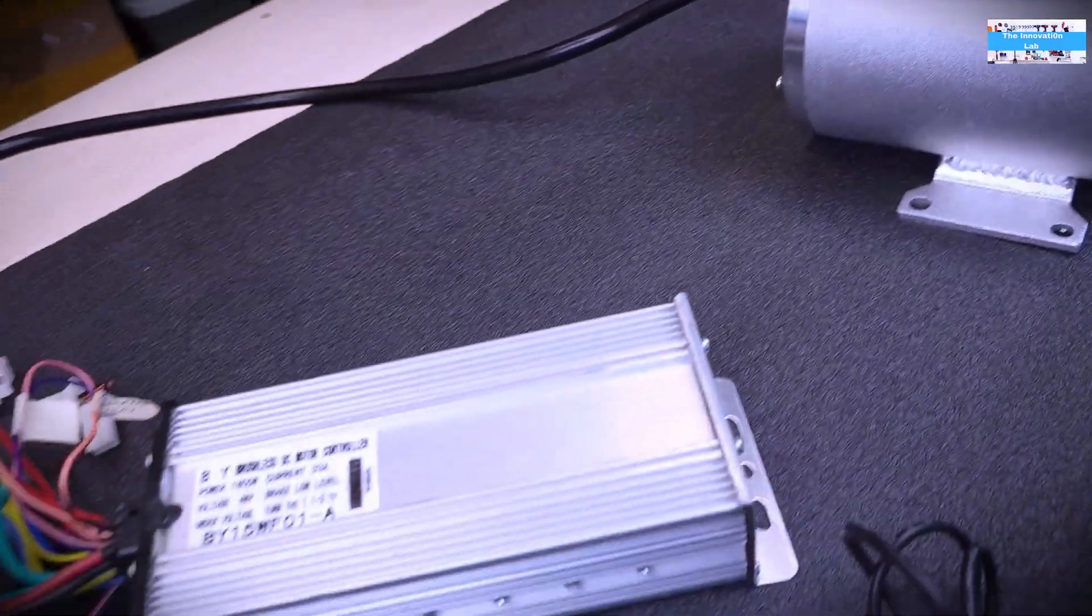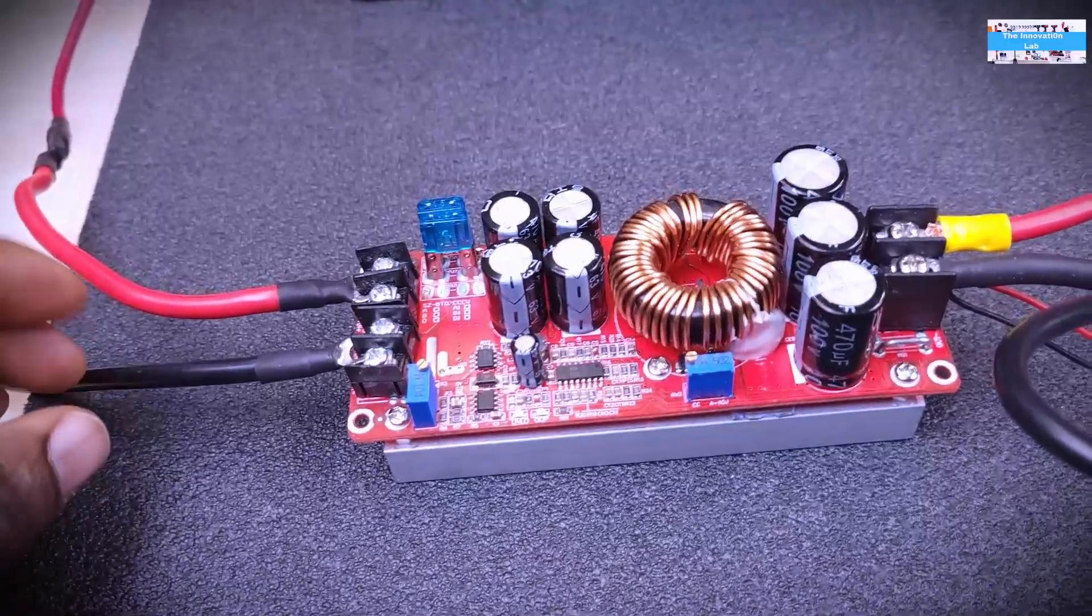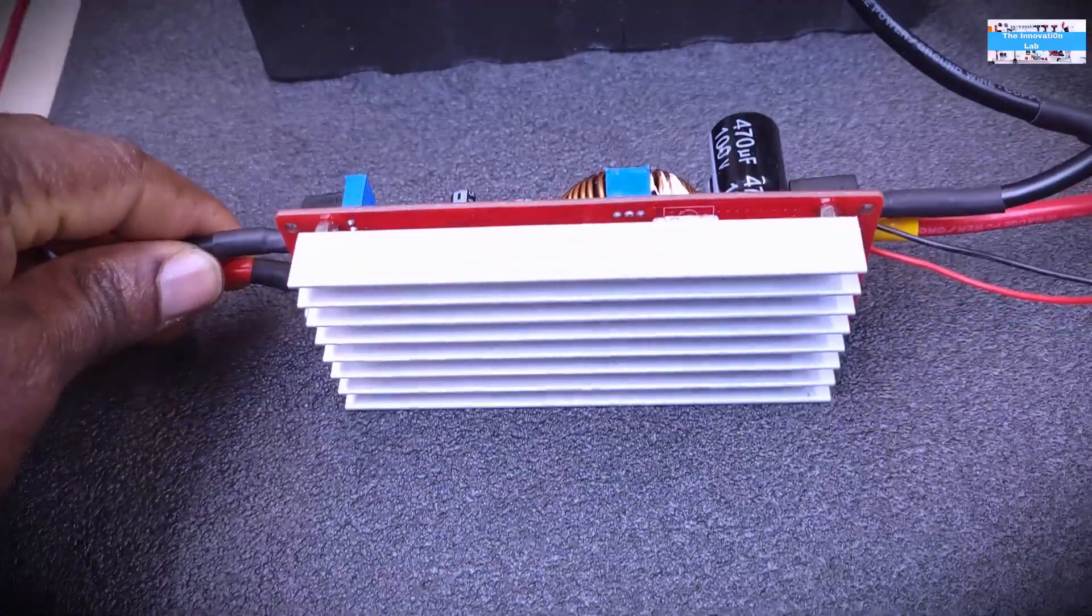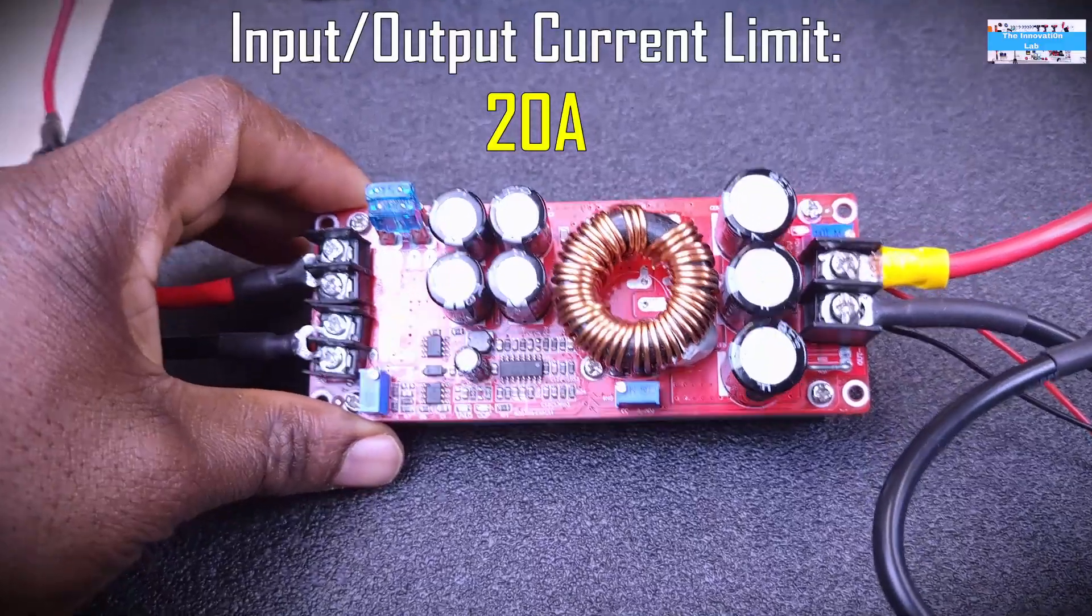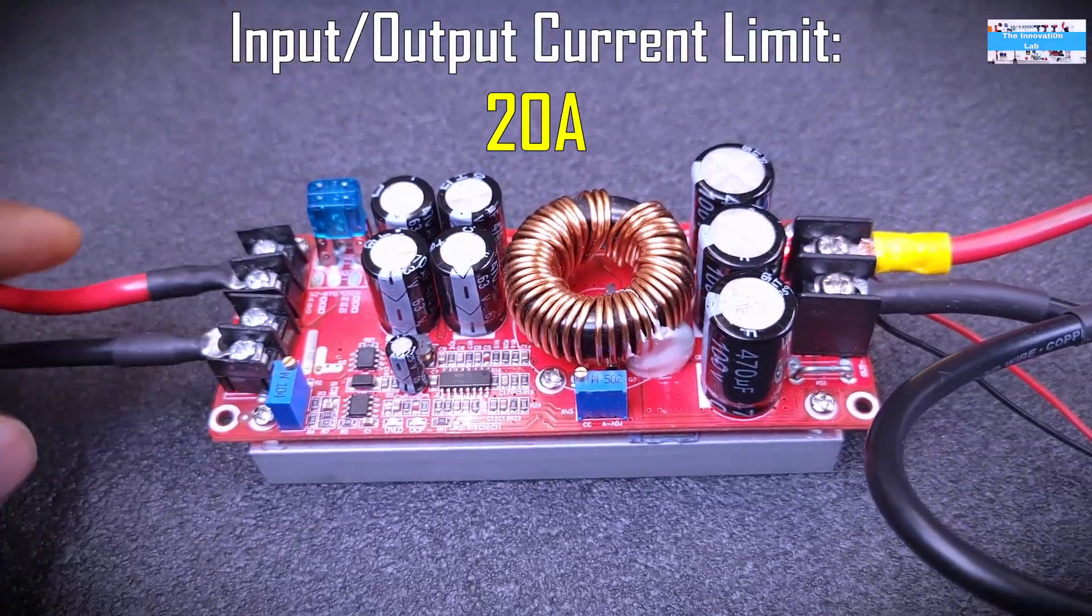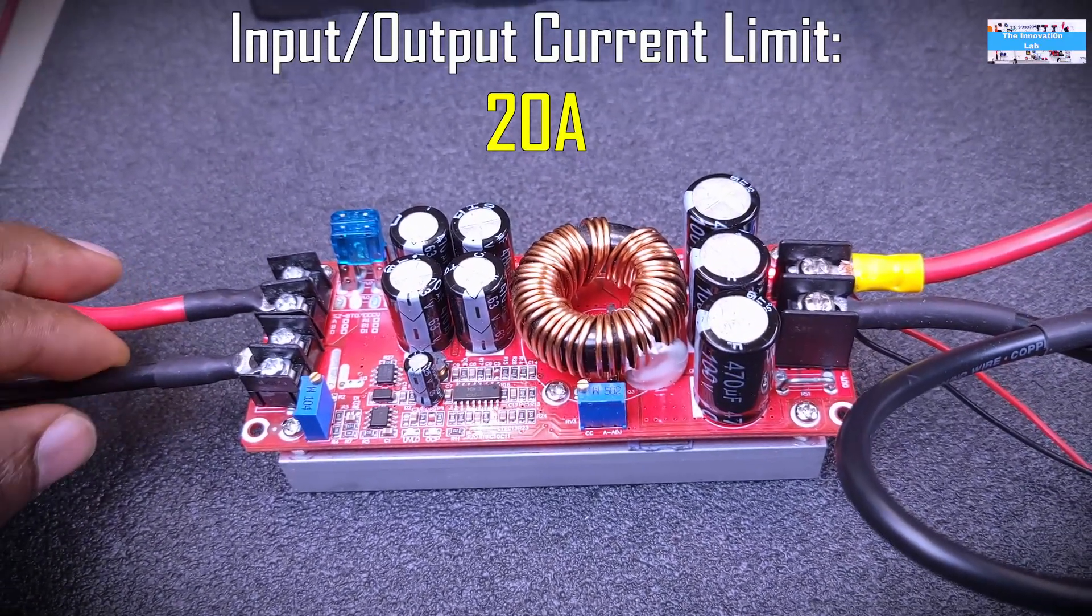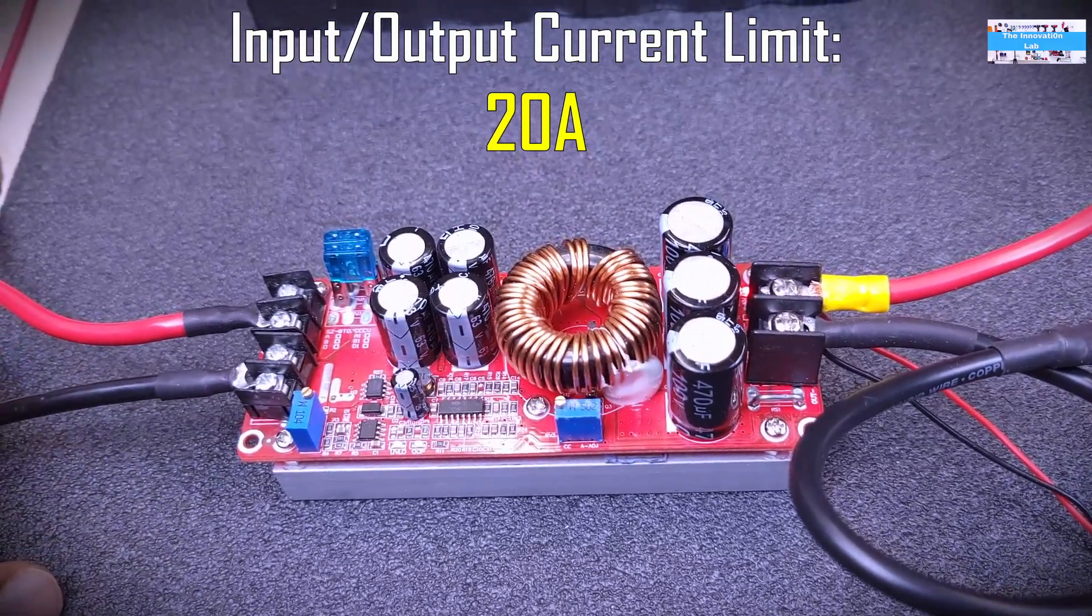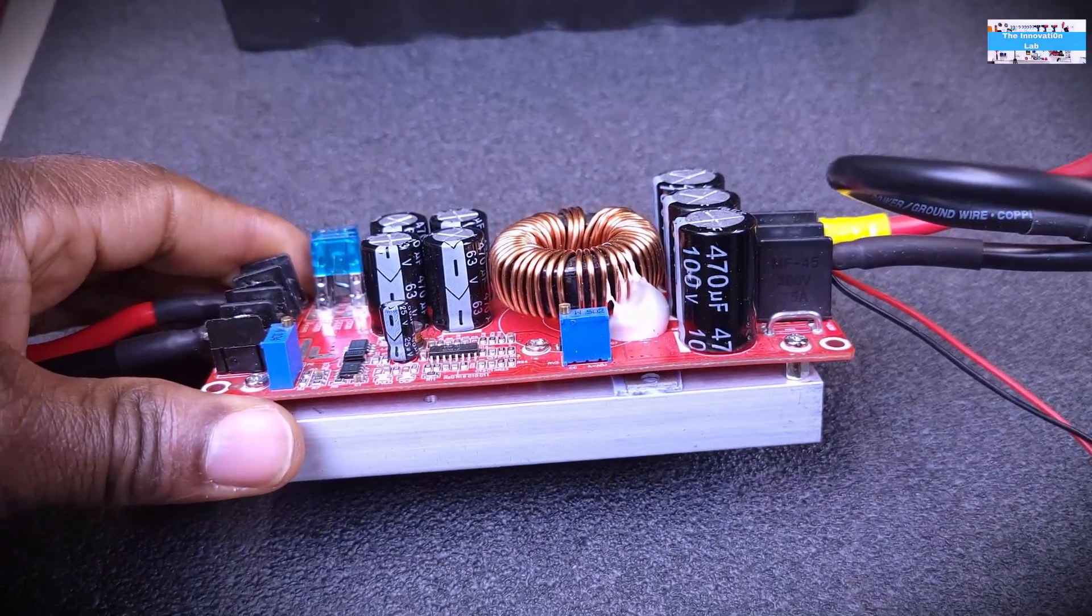One thing that I would like to mention, as I also pointed out in one of my charger videos that I made with these DC to DC boost converters, is that these converters are current limited. This version, which is the 1200 watt version, is limited to 20 amps of input current and also of output current.